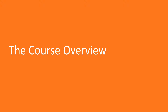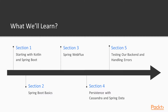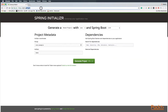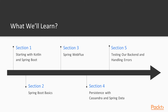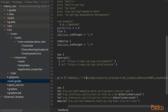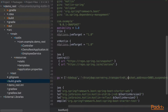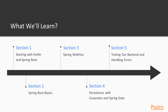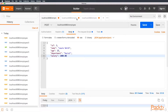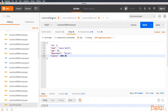Let's do an overview of the course. First, in the introduction of this course, we will be covering Kotlin and the tools we will be using. On session 2, Spring Boot Basics, we are going to create our first Spring Boot app and learn the basic components of Spring. On session 3, Web Flux and Reactor, we are going to add reactive programming to our application for the best performance.